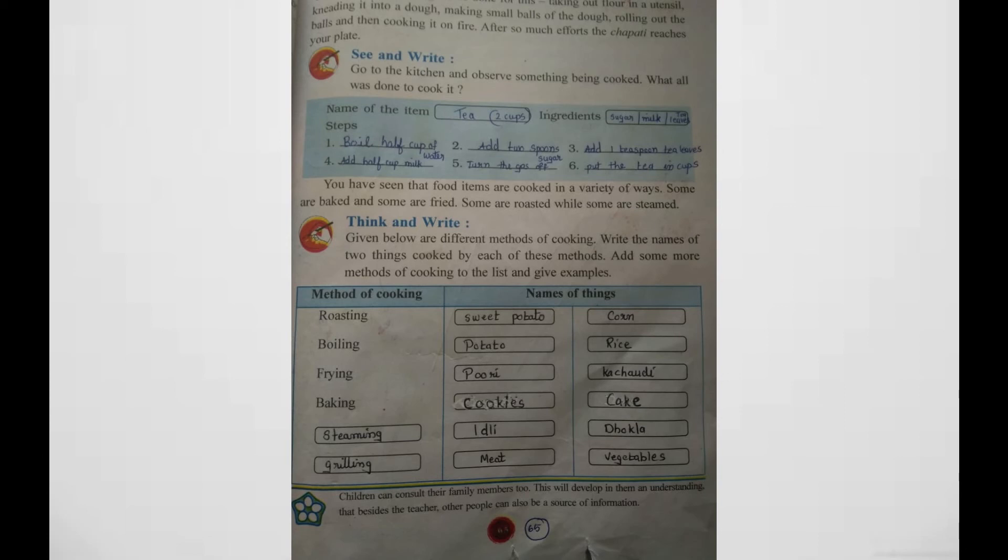Ingredients: sugar, milk, and tea leaves. What is the first step? Boil half cup of water. Next, add two spoons sugar. Third step, add one teaspoon tea leaves. Fourth step, add half cup of milk. Fifth step...